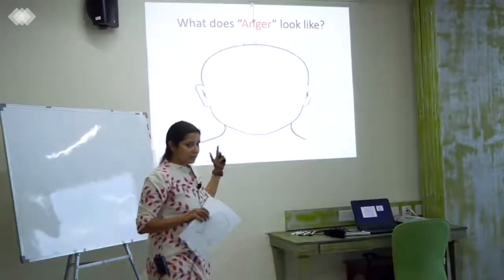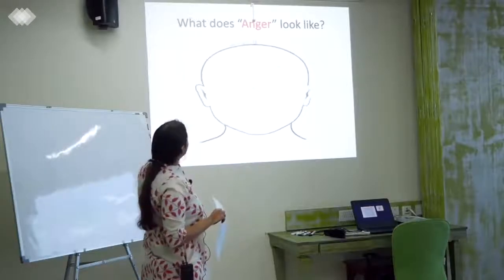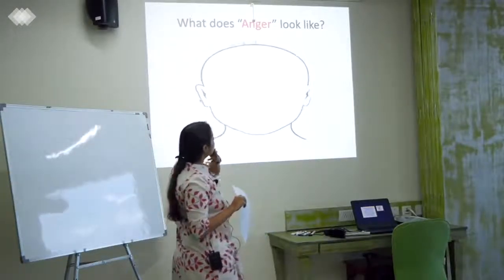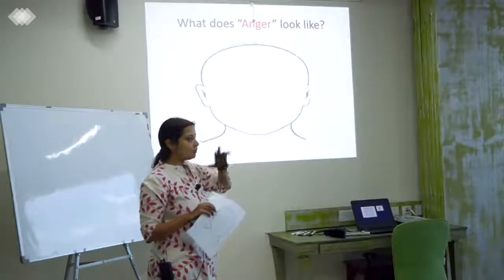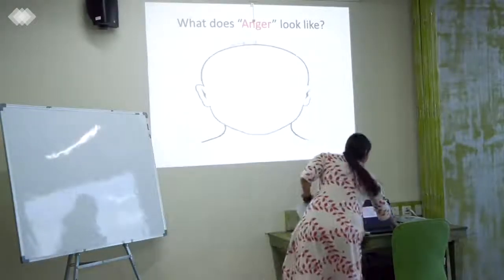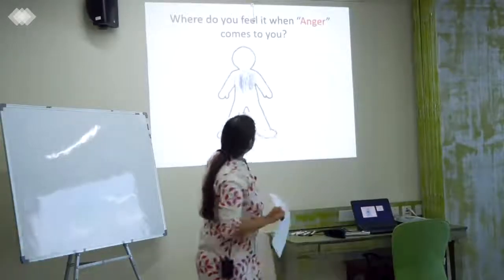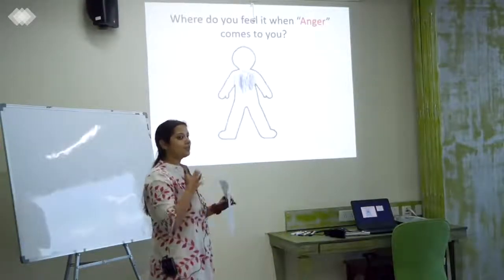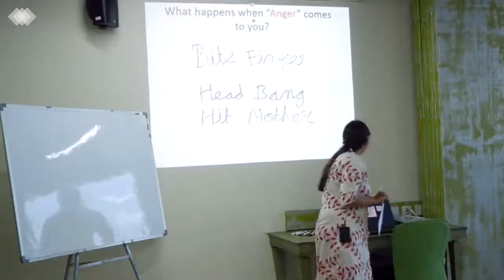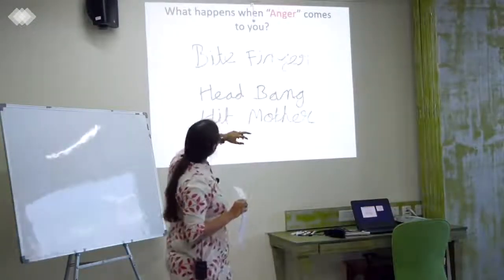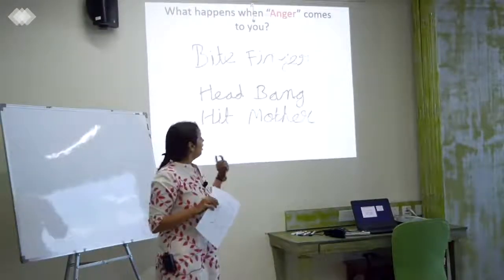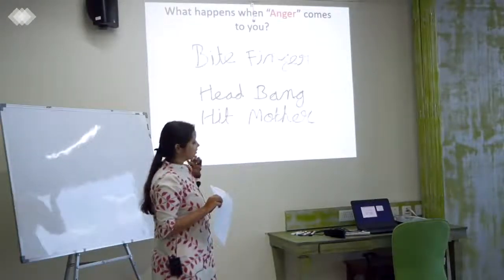With the same child we worked on anger — what does anger look like, and he drew something. I asked what he wanted to name this emotion, and he said 'angry.' When asked where he feels it when anger comes to him, he said in the chest. When asked what happens when anger comes, he said he bites his finger, he head-bangs, and he hits his mother.